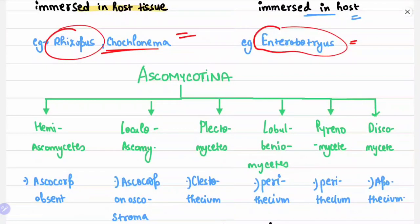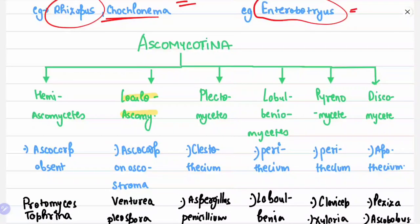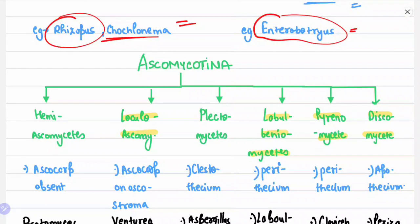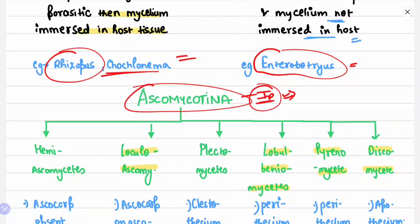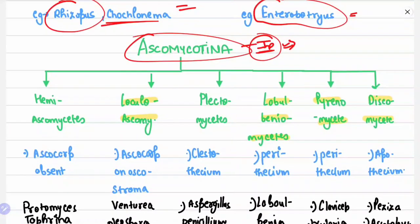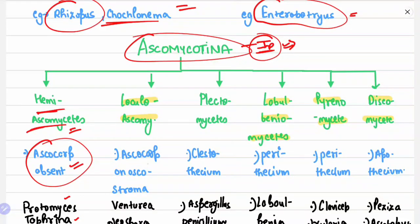Ascomycotina is further divided into various classes: Hemiascomycetes, Loculoascomycetes, Plectomycetes, Laboulbeniomycetes, Pyrenomycetes, and Discomycetes. Questions are usually asked from Ascomycotina in entrance examinations based on Ainsworth classification, so you should learn the examples thoroughly.